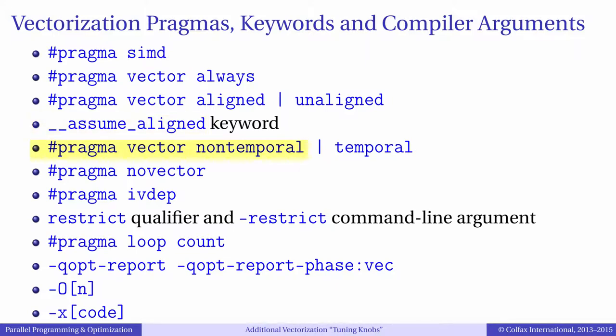Pragma Vector Non-Temporal says that data written to memory should be written directly to the RAM and not stored in caches. This is useful when you know that you will not reuse the results of the calculation soon. Pragma NoVector forbids automatic vectorization of the loop that follows it.